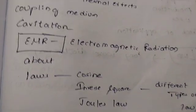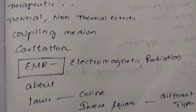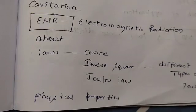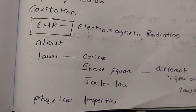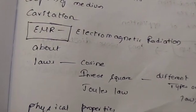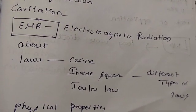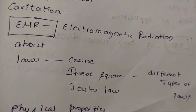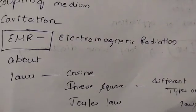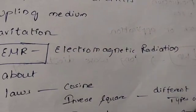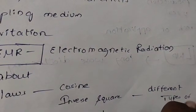Next is Electromagnetic Radiation — definition and laws including the cosine law, inverse square law, and Joule's law. Choose physiological properties.